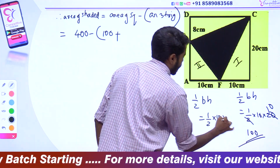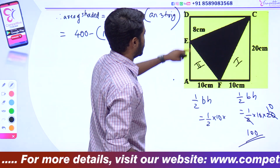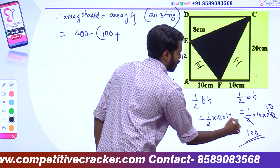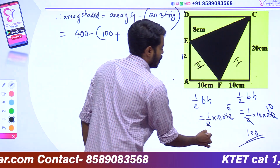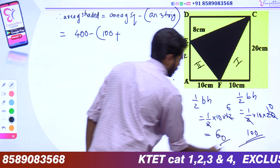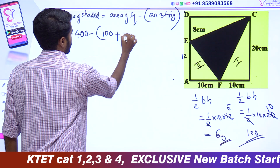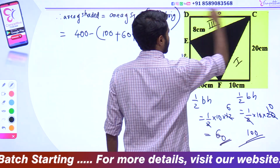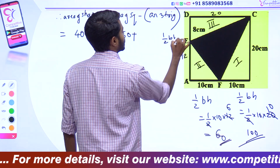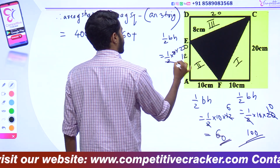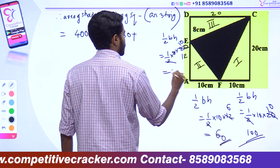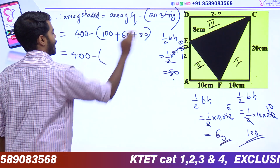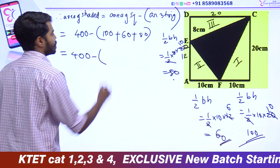Half into base 10 into height. We are going to put R into 12. That is 1 into 12 = 60. The value of area in the second triangle is 60. Plus the 3rd triangle — half BH equals half into 8 into 20. The value of area in the third triangle is 80. So: 400 minus (100 plus 60 plus 80) = 400 minus 240.